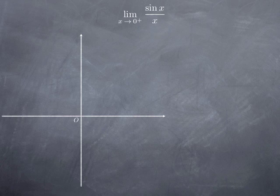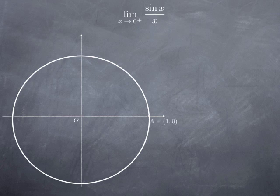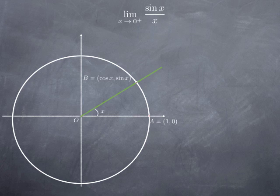In the plane, I'm going to consider the unit circle. Because it's a circle of radius one, the point of intersection of that circle with the x-axis has coordinates (1, 0). I take an angle of measure x radians, and the point of intersection of the half-ray defining this angle with the unit circle has coordinates cosine x and sine x.